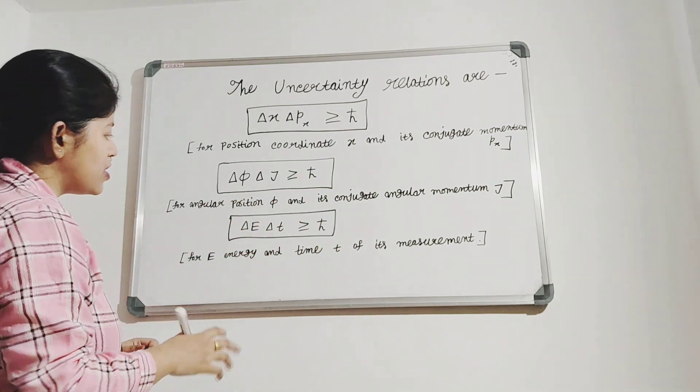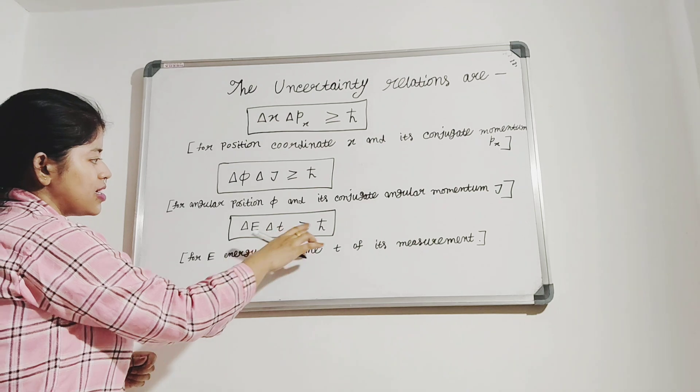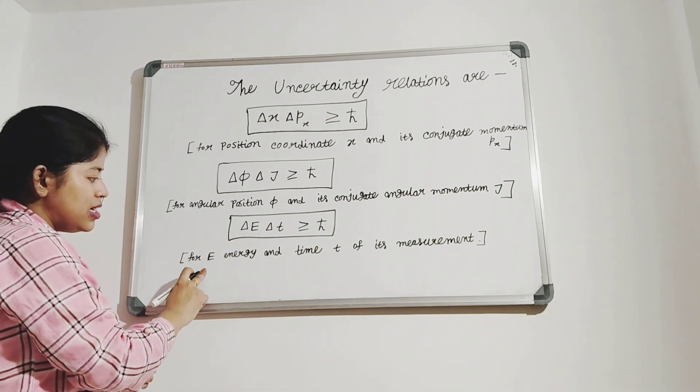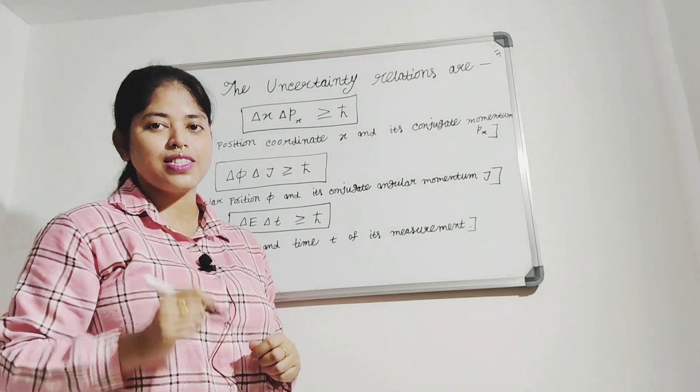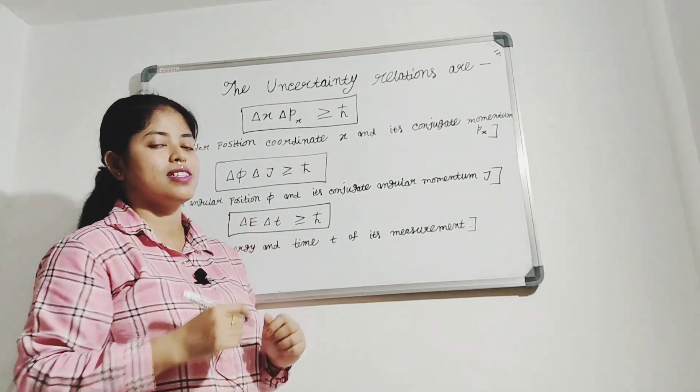Another uncertainty relation is delta E delta t greater than or equal to h-cut, for E energy and time t of its measurement. Now we are going to discuss one problem based on this uncertainty principle.